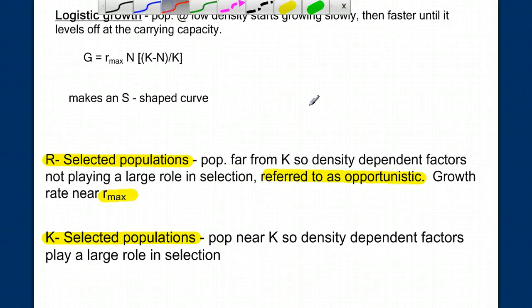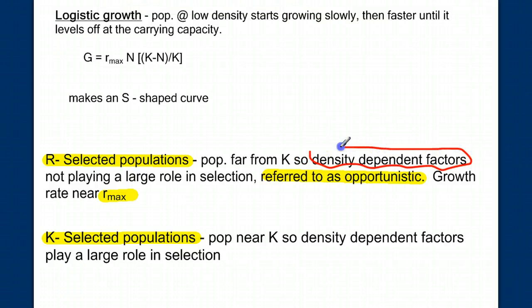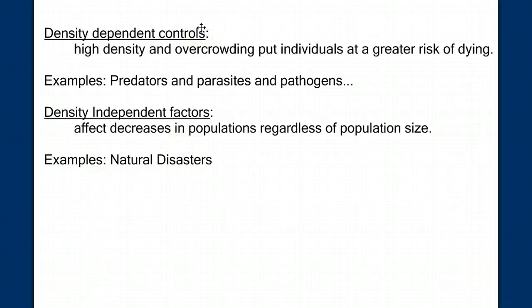There's a term I want to focus on: density-dependent factors. We need to contrast that with density-independent factors and how they can control population growth. Density-dependent controls occur when high density and overcrowding put individuals at greater risk of dying — for example, predators can easily pick off prey as the population grows, and parasites and pathogens transfer more easily in a dense population. This carries concern for human populations moving from rural settings to urban centers where a pathogen can spread easily. Density-independent factors are those which can decrease a population regardless of its size — for example, natural disasters.